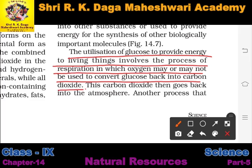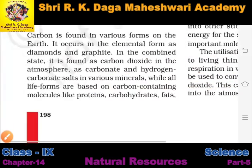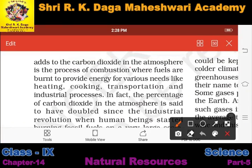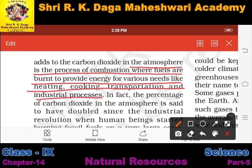In some organisms, respiration occurs in the presence of oxygen — aerobic respiration — and in others, in the absence of oxygen — anaerobic respiration. This carbon dioxide then goes back into the atmosphere. Another process that adds carbon dioxide to the atmosphere is combustion, where fuels are burned to provide energy for heating, cooling, transportation, and industrial processes.